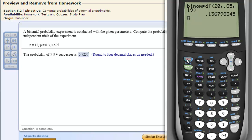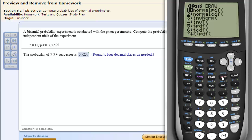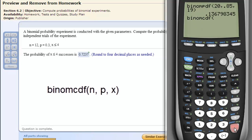on the calculator. It's just as fast. We do second VARS to get to distributions. We go up and go to the binomial cumulative distribution function, binomcdf. Click enter.